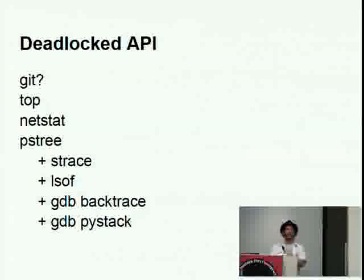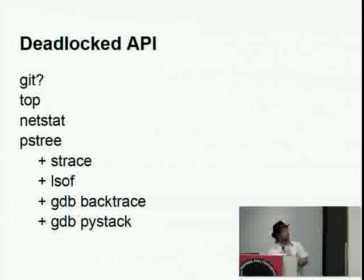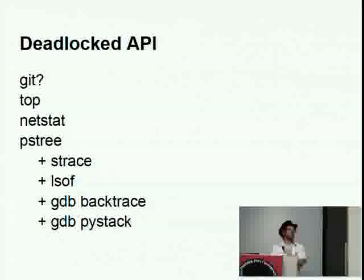When I looked at top, all the processes I expected to see doing work were doing absolutely nothing. If I looked at netstat, you could see a lot of connections in something like TCP wait — one of the ops people told me what netstat said. From there I looked at pstree, because this was a process I wasn't familiar with, to understand the structure and who they were talking to. I could see this was effectively a supervisor talking to a series of worker nodes, passing information back and forth, and something wasn't going correctly.